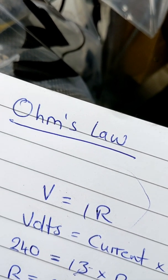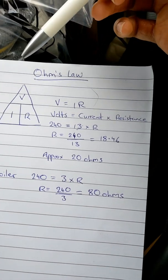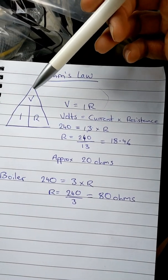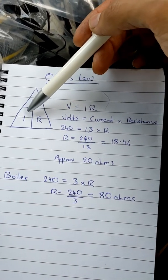It all comes down to Ohm's Law. You can have a look on Google, but I'll give you a brief understanding of it. It's basically this triangle. You've got your volts, you've got your current, and you've got your resistance.